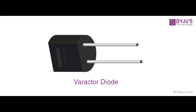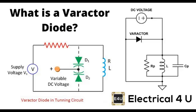Phase-locked loops (PLLs): Varactor diodes help in adjusting the frequency of the voltage-controlled oscillator within a PLL to lock onto a desired frequency. Applications include frequency synthesis, modulation, demodulation, and clock generation in digital circuits.